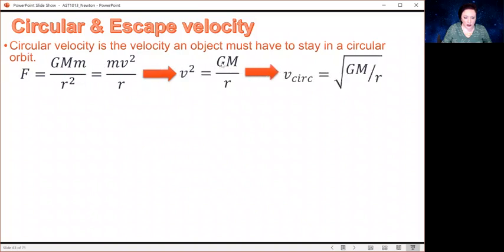Remember, this is the gravitational constant. This is the mass of whatever's in the middle, might be the Earth, if it's something in orbit about the Earth. And this is the radius of the orbit. So the circular velocity is going to depend on the mass around which a thing is trying to orbit and its distance from the center of that object.